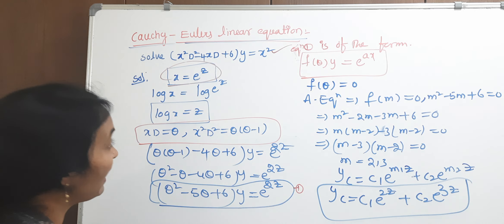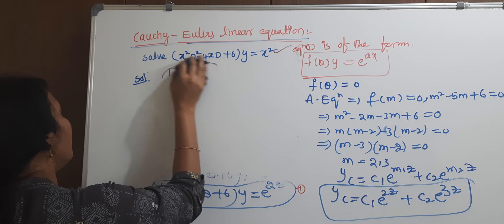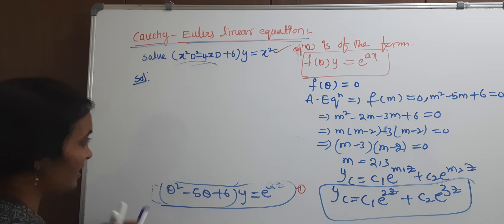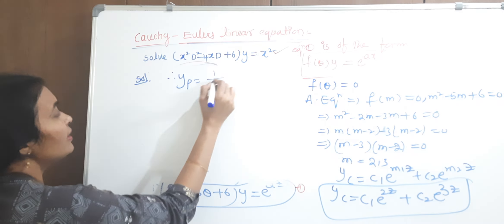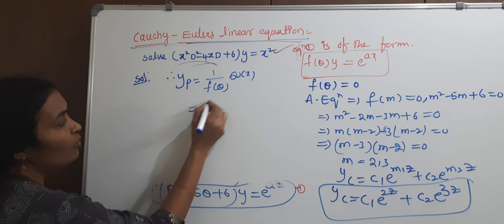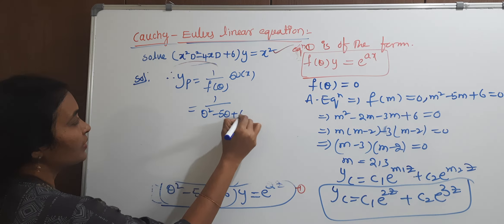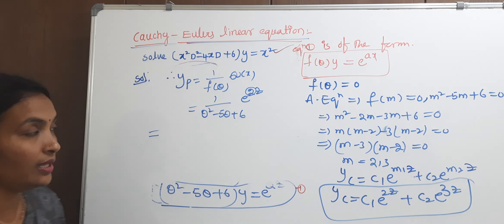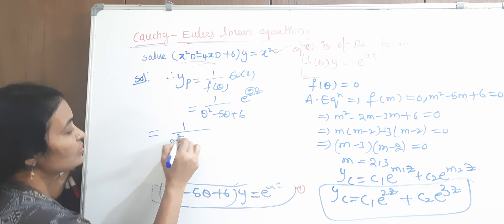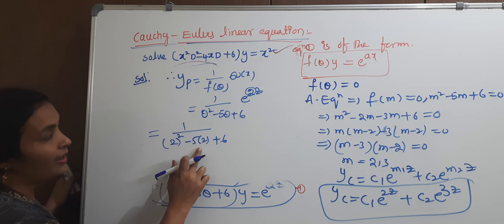Now calculate yp, the particular integral. The particular integral is 1 over f(theta) into Q(x). Here Q(x) is e to the power of 2z. Substitute theta equals 2: we get 2 squared minus 5 times 2 plus 6, which is 4 minus 10 plus 6, equals 0.